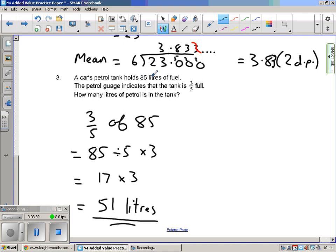Question number three: A car's petrol tank holds 85 litres of fuel. The petrol gauge indicates that the tank is 3/5 full. How many litres of petrol is in the tank? So we have to do three fifths of the amount. To find three fifths of an amount I divide by five to find one fifth, I then multiply by three to get three fifths. So 17 - five into 85 is 17. If we're not sure why, quick division sum at the side.